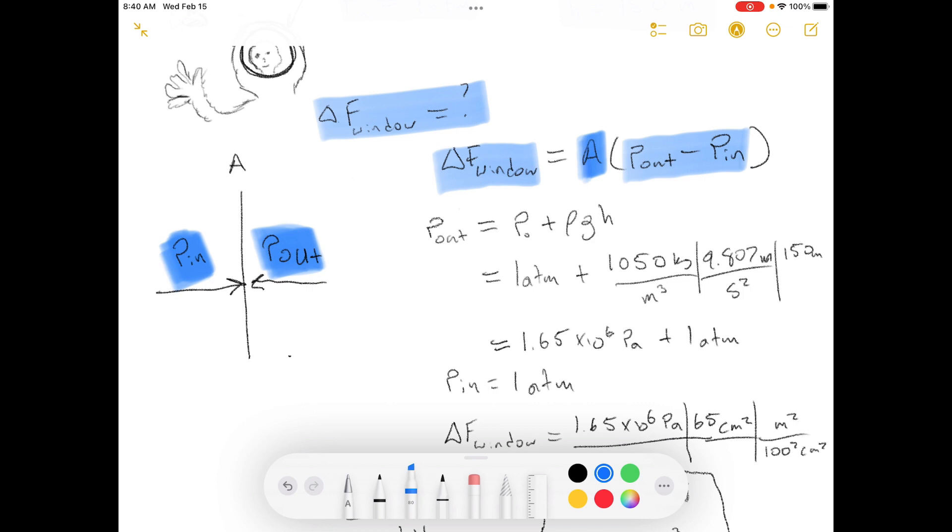So let's look at what the pressure on the outside of the glass is. The pressure on the outside of the glass, this is the general formula. That includes pressure plus the hydrostatic pressure.